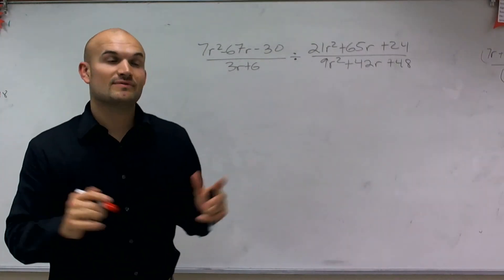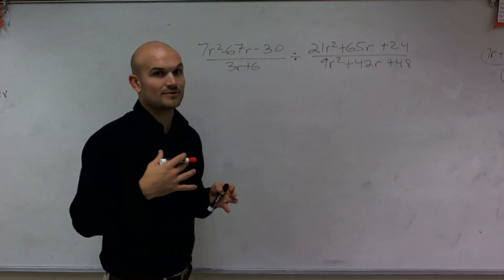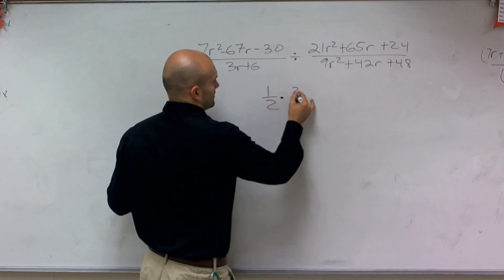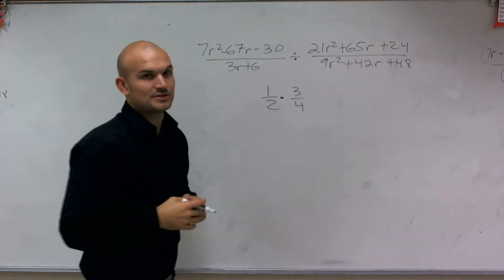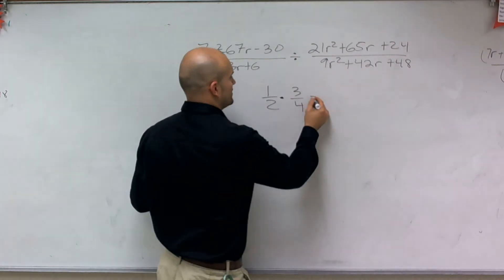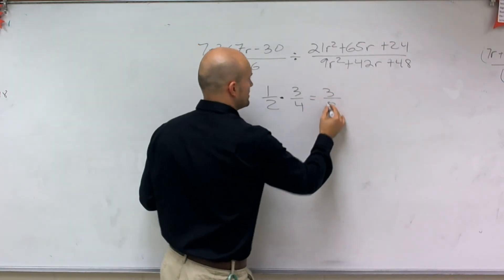Before we even get caught up in all this stuff, let's just go back and remember a couple things about fractions. When I want to multiply two fractions, I simply multiply the numerators across and the denominators. So in this example, I would get 3 over 8.